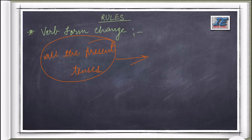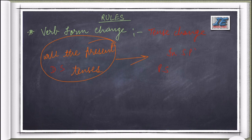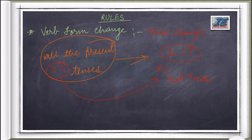Now come the rules. First and foremost is verb form change, also called tense change. When it comes to tense change, all the present tenses of direct speech change to past tenses in indirect speech. Simple present changes to simple past, present continuous to past continuous, present perfect to past perfect, and present perfect continuous to past perfect continuous.